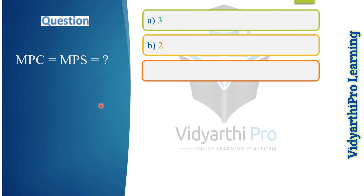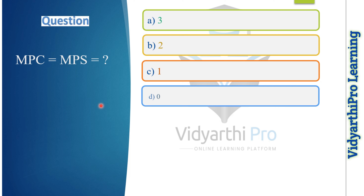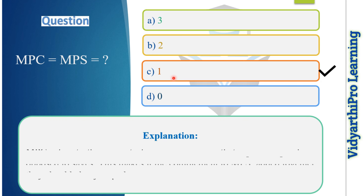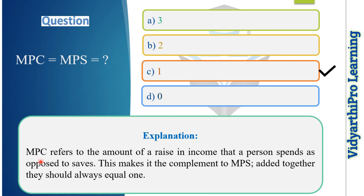The next question: MPC + MPS equals what? Option one: 3. Option two: 2. Option three: 1. Option four: 0. The correct answer is option three — MPC + MPS = 1. MPC means marginal propensity to consume and MPS means marginal propensity to save. Marginal propensity to consume refers to the amount of a raise in income that a person spends as opposed to saves. Together MPC and MPS always equal one.